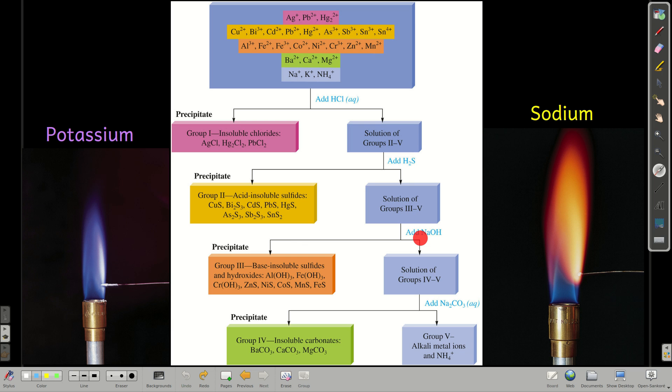Next, we just add some sodium hydroxide, and that will precipitate out as sulfides, the ones that are base insoluble, as well as any hydroxides that are in there, any insoluble hydroxides like aluminum hydroxide, iron 3 hydroxide, chromium 3 hydroxide. And so we get group 3, these guys right here.